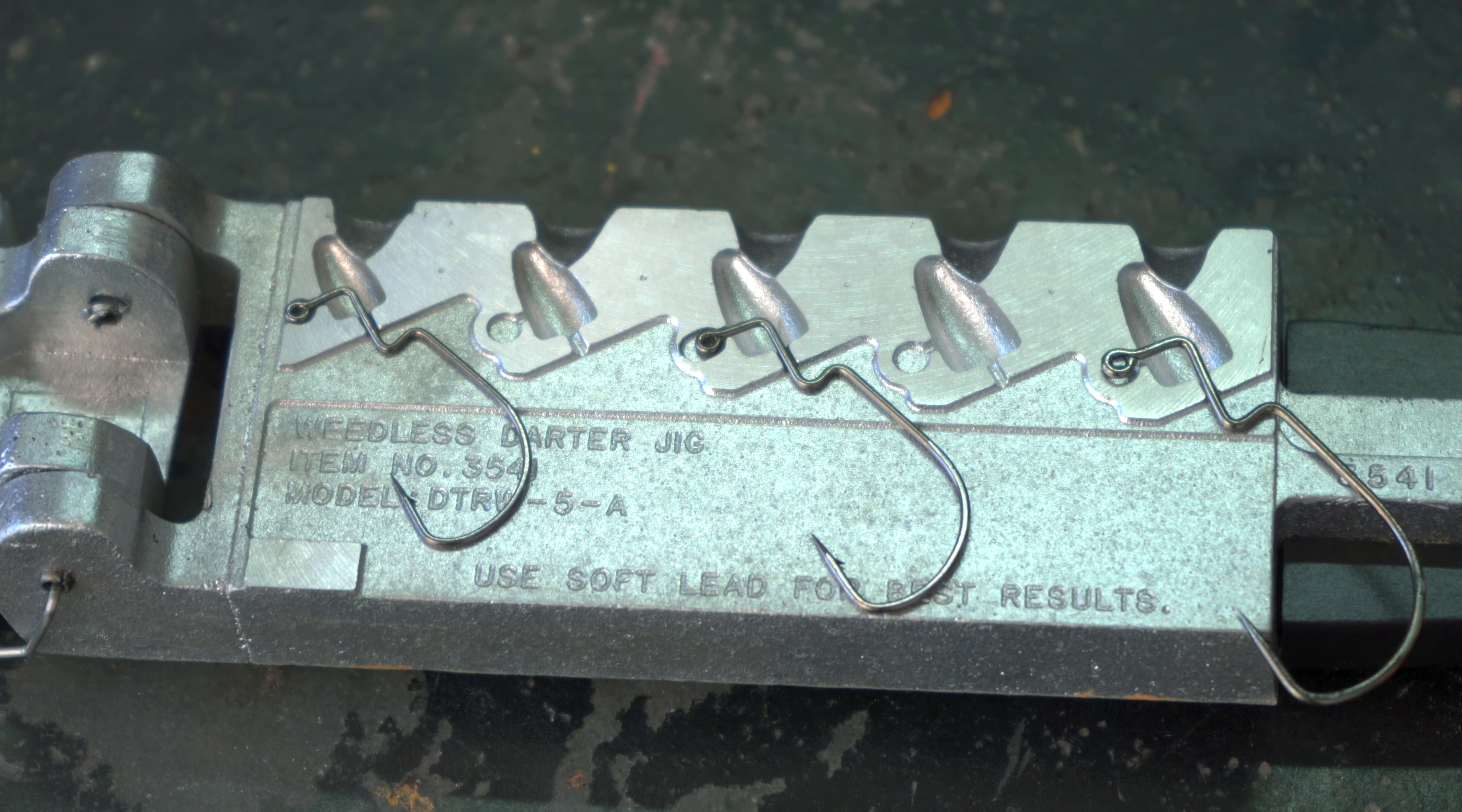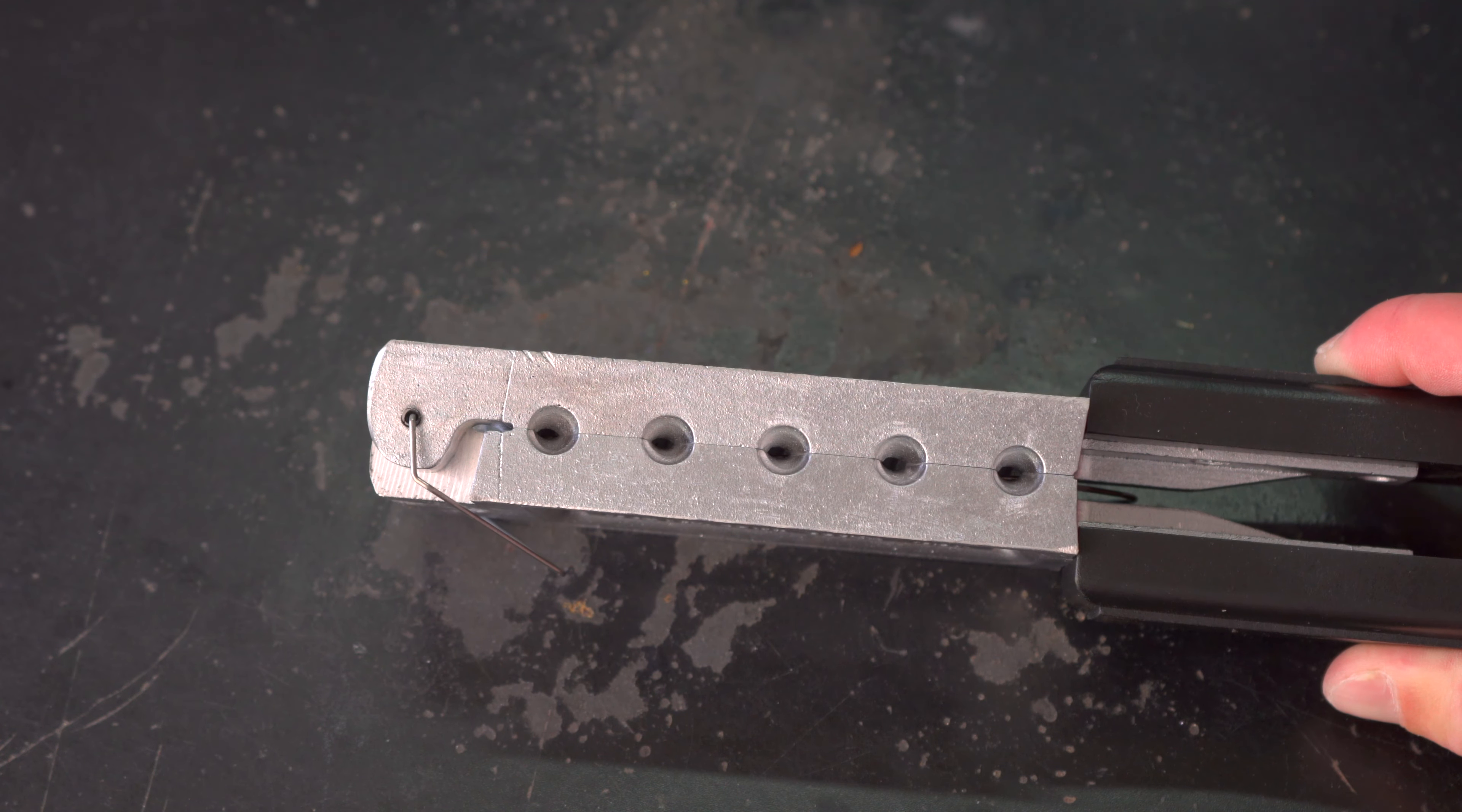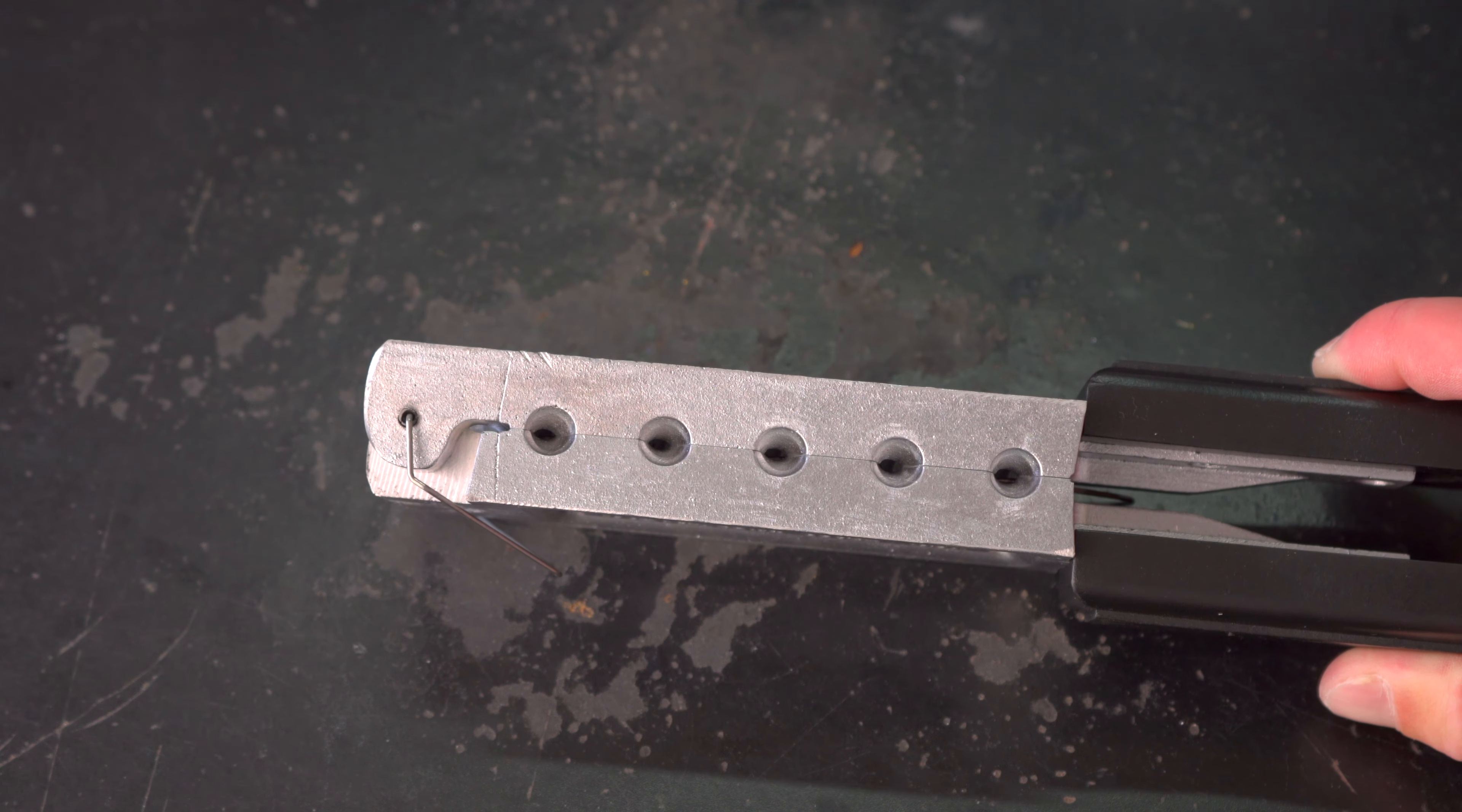I think you can probably go up one size or down one size in each of these cavities if you want to. Once the mold's closed, I like to turn it up and check this seam right here to make sure it's nice and flush. When it's flush, you can guarantee that you're not going to get any flashing when you pour the lead into those ports.